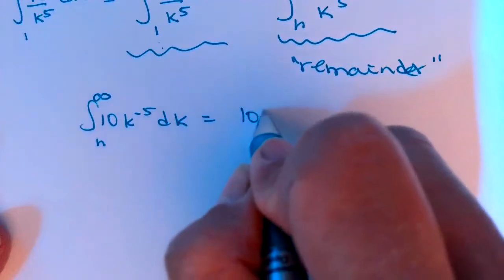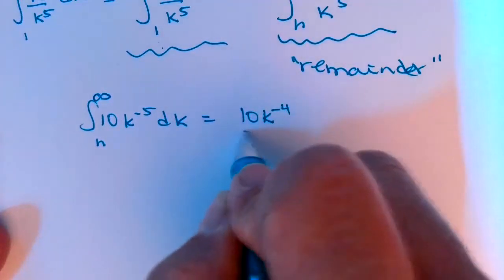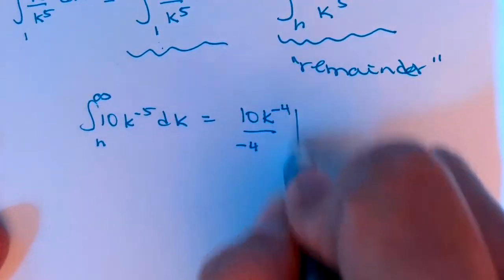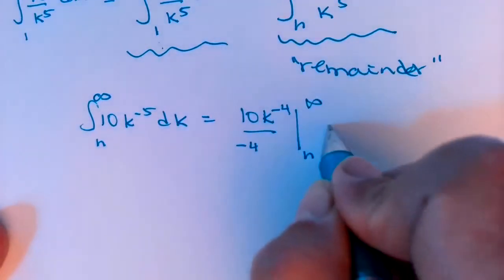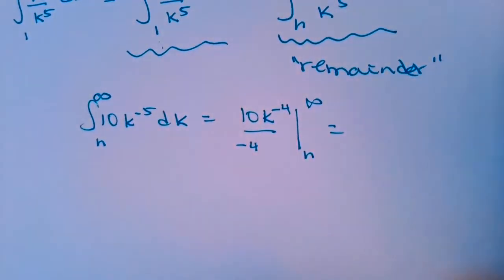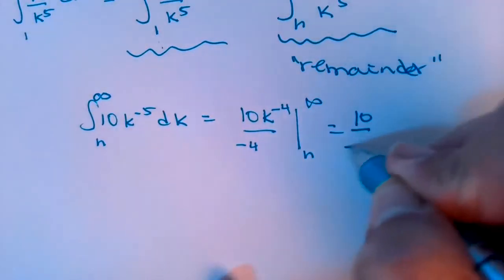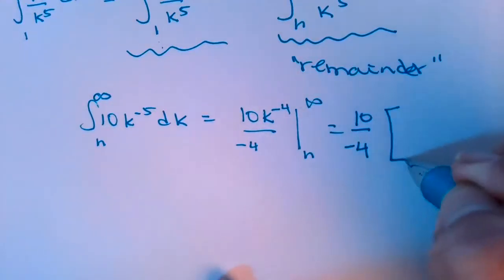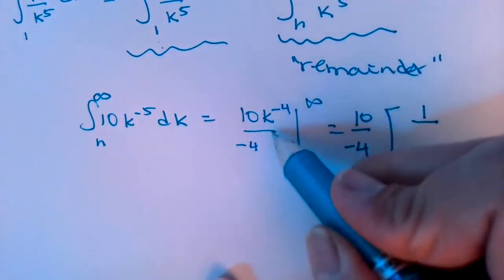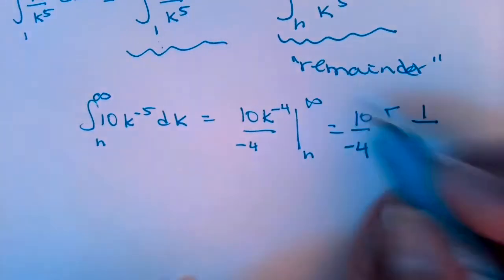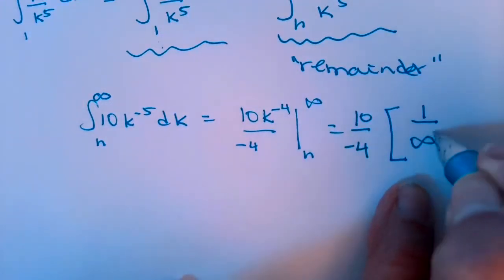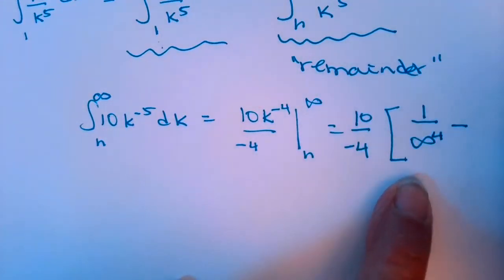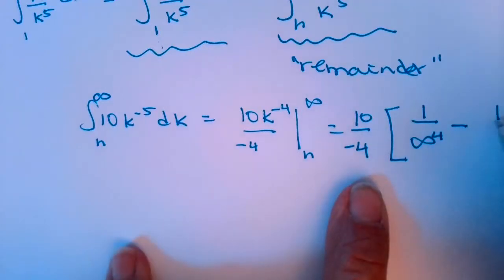So here we go. So I get 10k to the negative 4 divided by negative 4 from n to infinity. So I'm going to actually plug in the infinity. 10 over negative 4, 1 over—so now I have k's in the bottom to the 4th—so infinity to the 4th minus 1 over n to the 4th.